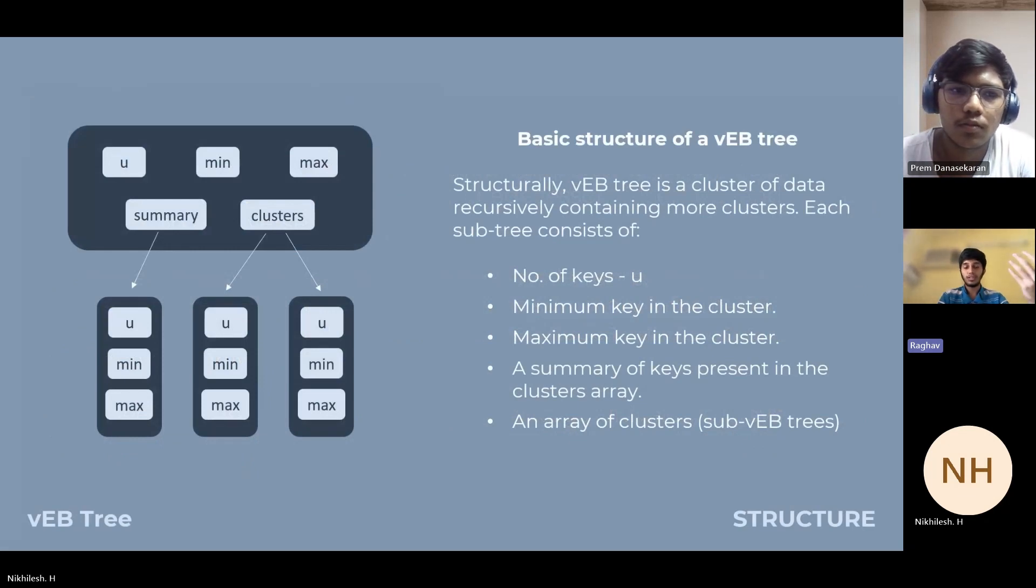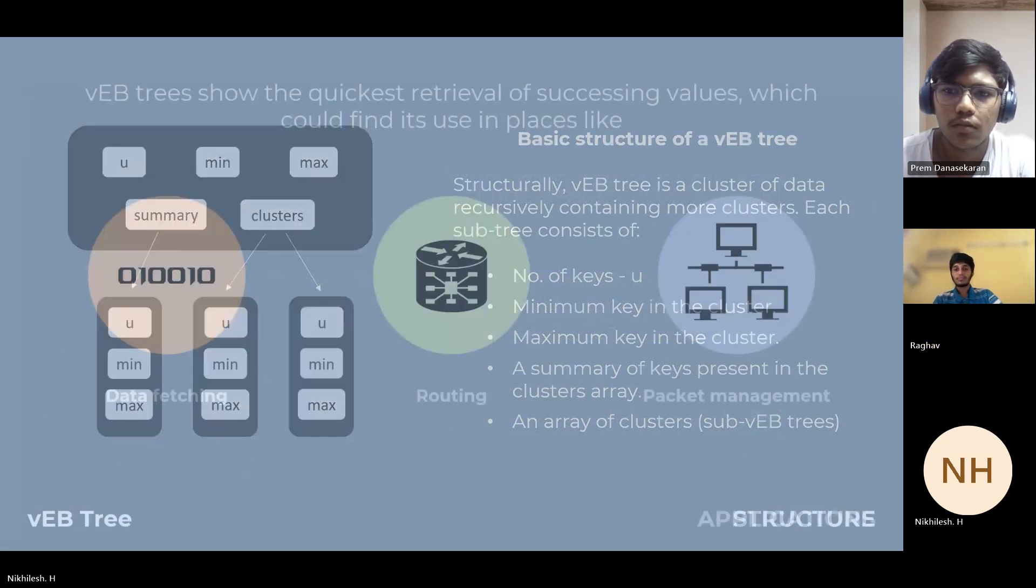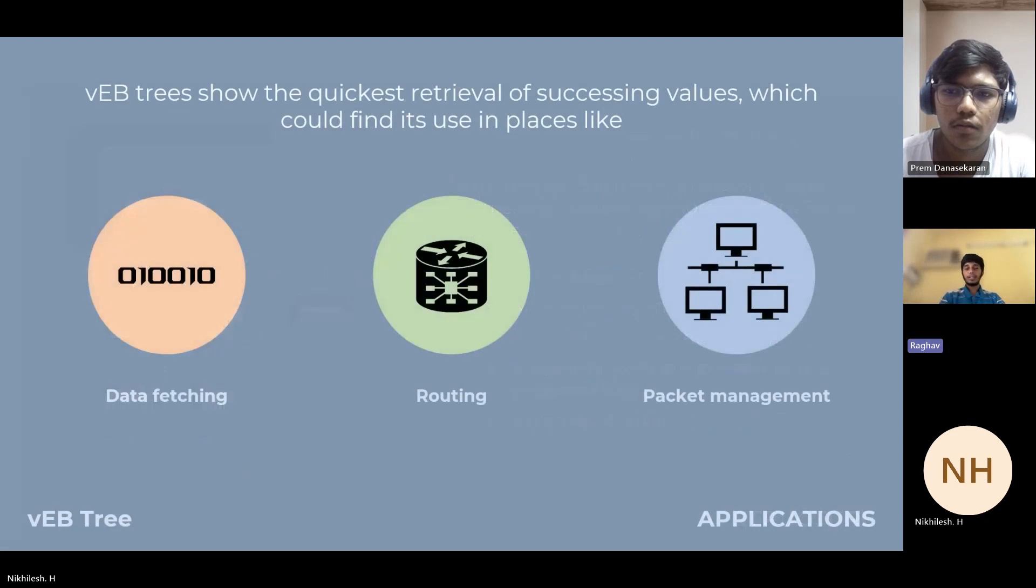Talking about applications, the first one is data fetching, routing, and package management. For example, if you have an IP address within a range between two values and you want to send a particular packet in that particular range, finding that range is where vEB tree would be useful.